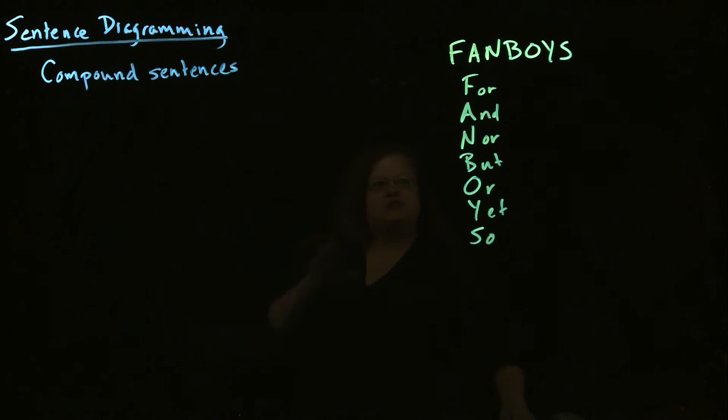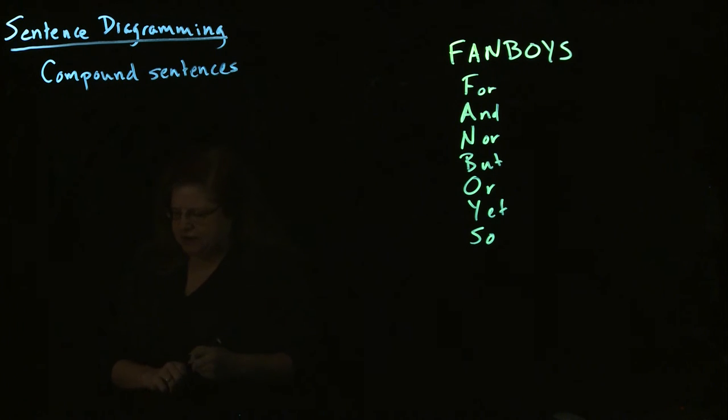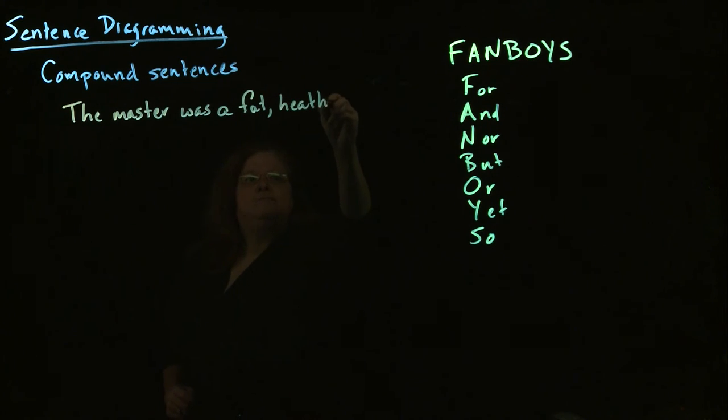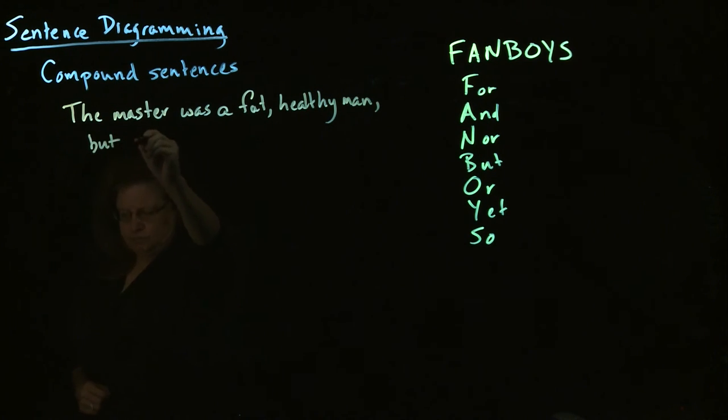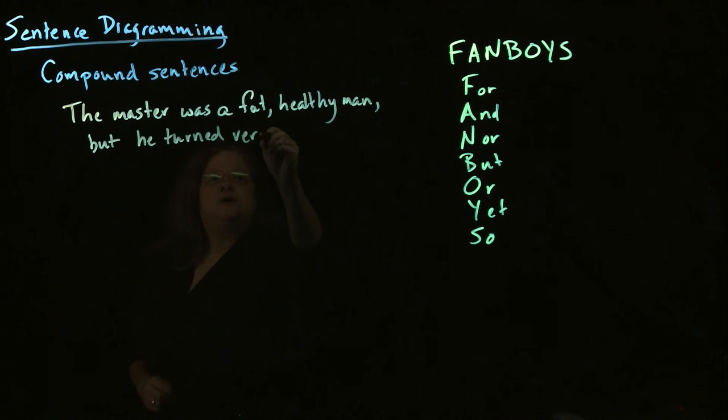So when you're connecting sentences with these connectors, what you're saying is the two sentences are equally important to each other. There isn't one that's subordinate to the other. So if we have two sentences that are connected using one of those, you get something like this: The master was a fat, healthy man, but he turned very pale.